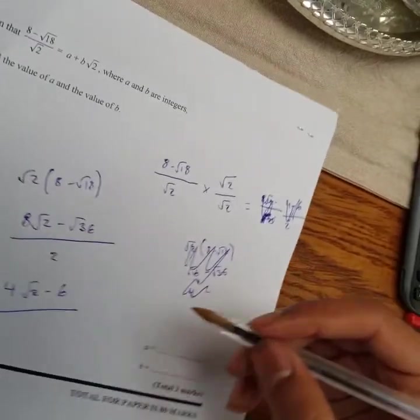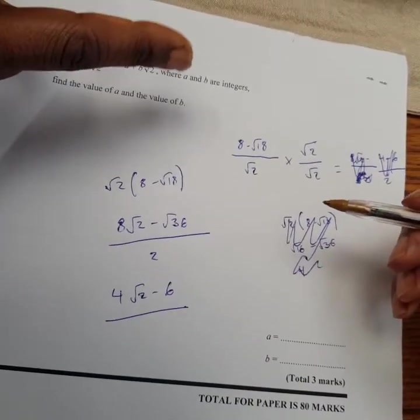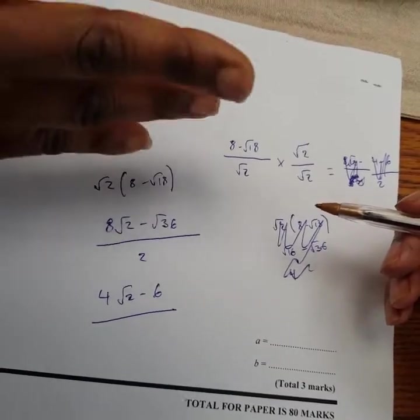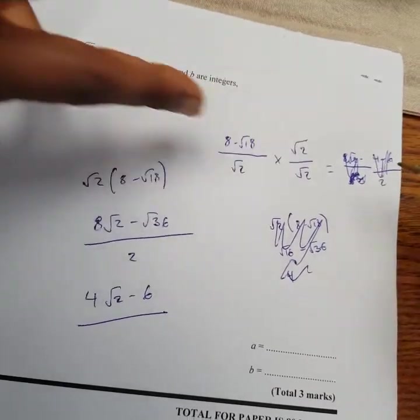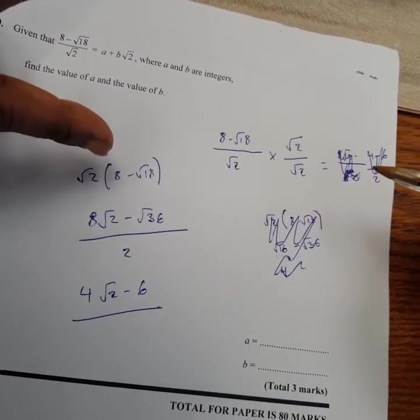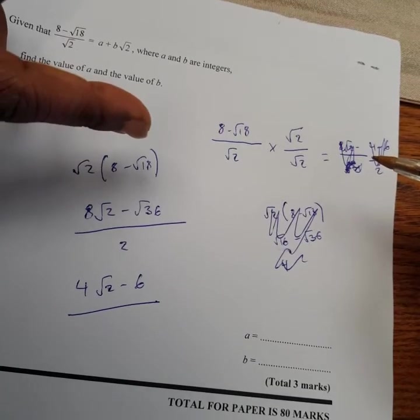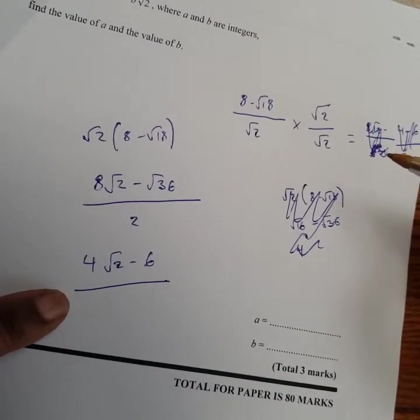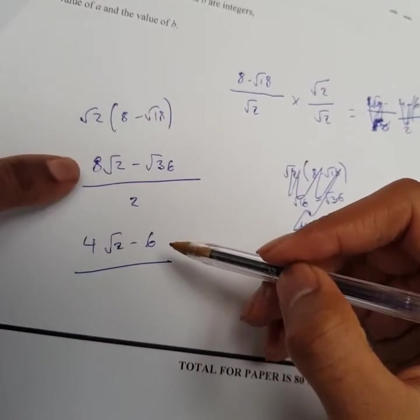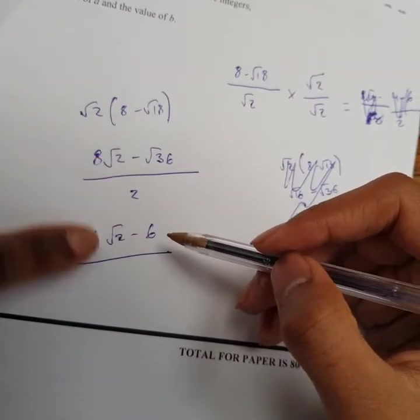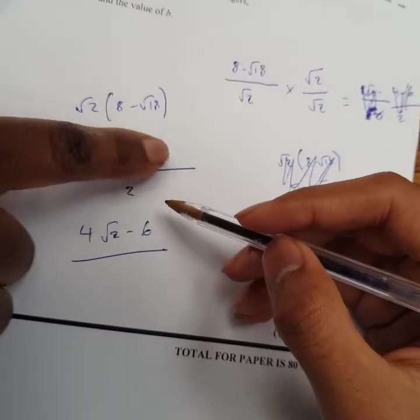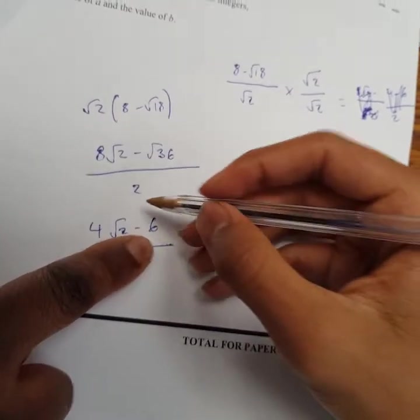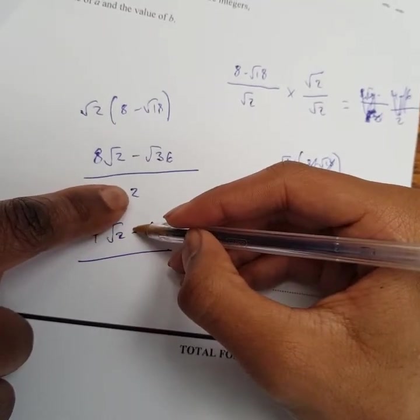And then your root 36 is 6, yeah? I could just, yeah. Yeah. But I think something is still wrong somewhere. Let's see where the problem might be. So you've done 8 minus root 18 over root 2. Well done. So you've done root 2 bracket 8. Yeah, I know what you've done wrong. So here, look, you've done 2.